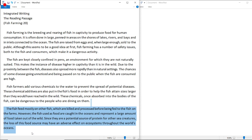All right, now the third body paragraph. The fish feed mostly on other fish, which are killed and processed before being fed to the fish on the farms. However, the fish used as food are caught in the oceans and represent a large amount of food taken out of the wild. Since they are a potential source of protein for other sea creatures, the loss of this food source may have an adverse effect on ecosystems throughout the world's oceans.